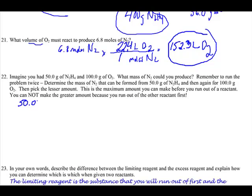Start the first one with the first bit of information given to you in the problem. 50.0 grams of N2H4, or NH4 rather, times grams N2H4.